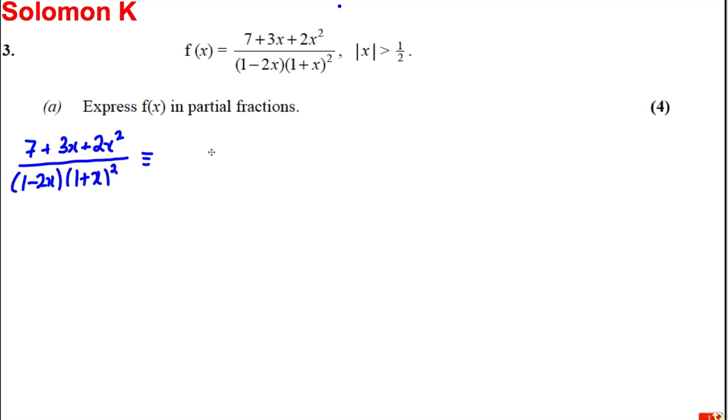This is a standard result you need to know. It's A over (1 subtract 2x) plus B over (1 plus x) plus C over (1 plus x) squared. Usually one mark for writing that down.